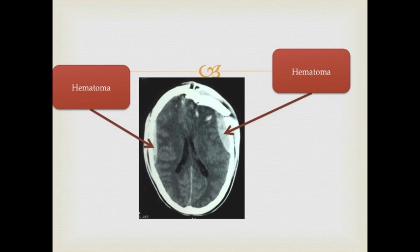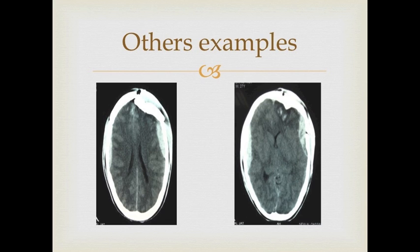The hematoma appears hyperdense, and the presence of a biconvex mass are both characteristic of an epidural hematoma. In the same image, you can see the lateral ventricle is shifted to the other side. These are other examples of epidural hematoma.